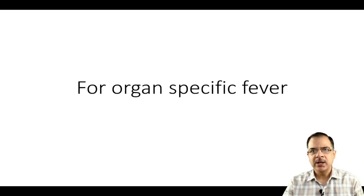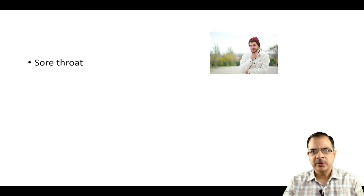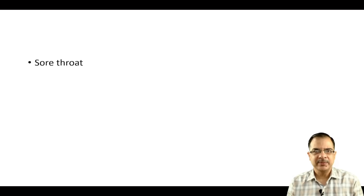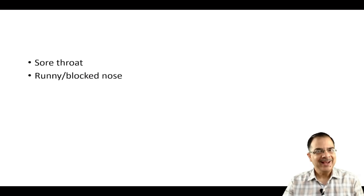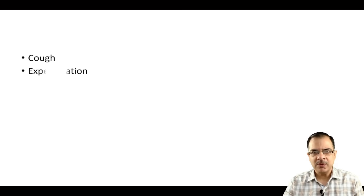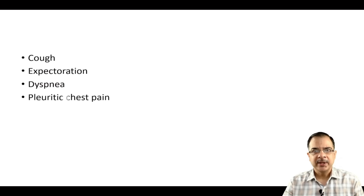Coming to organ-specific symptoms — if a patient comes to the OPD, ask these symptoms in sequence. Any history of sore throat, pain in the throat, runny or blocked nose, cough — these are suggestive of upper respiratory tract infections. If the patient has cough along with sputum production, dyspnea, increased respiratory rate, and pleuritic chest pain (a sharp pain on taking a deep breath), along with fever and chills, these are all suggestive of pneumonia — a lower respiratory tract infection.